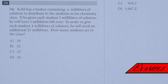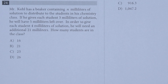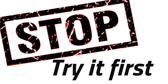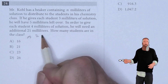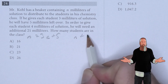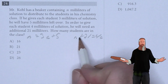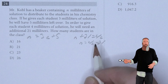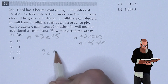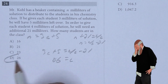C is the answer. Mr. Cole has a beaker containing N milliliters of solution. If he gives each student 3 milliliters, he will have 5 milliliters left over. In order to give each student 4 milliliters, he'll need an additional 21 milliliters. How many students are in the class? N equals 3C plus 5, and N plus 21 equals 4C, so N equals 4C minus 21. Setting these equal: 3C plus 5 equals 4C minus 21, giving us C equals 26. D is the answer.